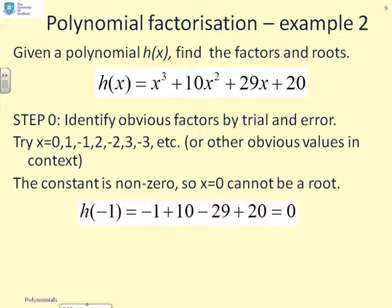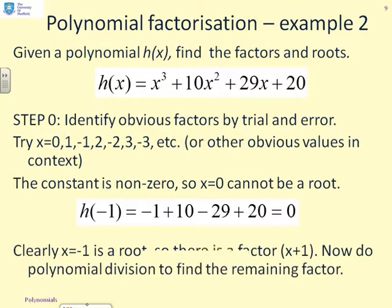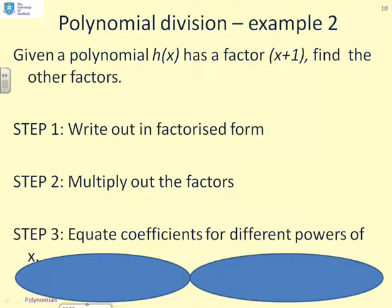However, if I try -1, then you see x³ gives me -1, 10x² gives me plus 10, 29x gives me -29, and 20 gives me plus 20, and I get 0. So, very quickly, I've spotted there's a root at -1. So, -1 is a root, so there must be a factor (x+1). And now, I can use my polynomial division to find the remaining factors.